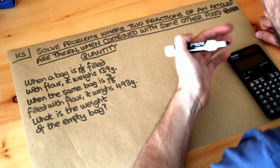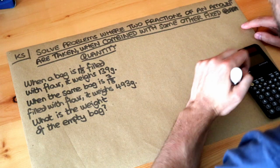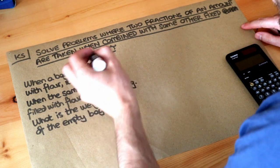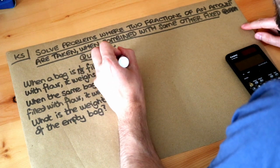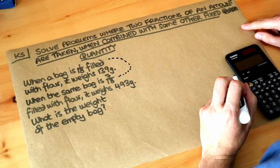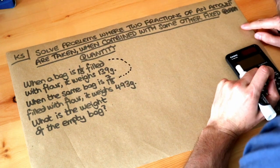Now the reason this is a slightly hard problem is because you've got the weight of the flour plus the weight of the empty bag and that just complicates it a bit. But let's think when we go from 1/18th filled of the bag to 7/18ths filled of the bag, what's the difference in terms of the fraction of the bag filled with flour?